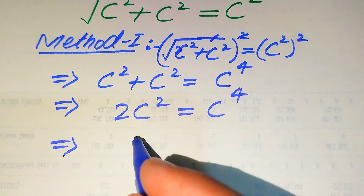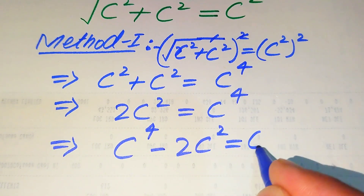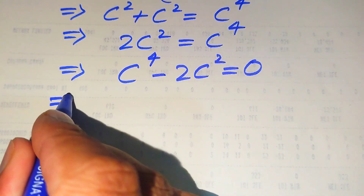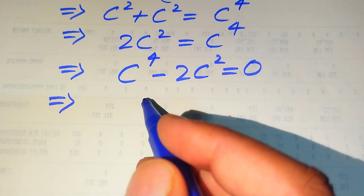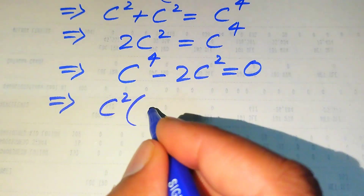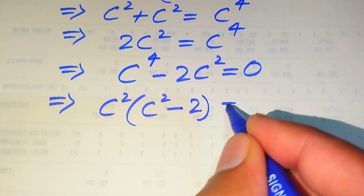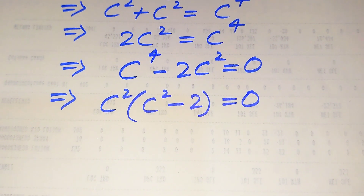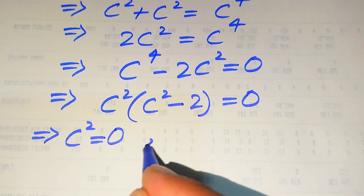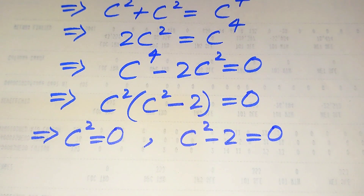In the next step we move two times c squared to the right hand side, giving c to the power of four minus two times c squared equals zero. Now we factor out c squared from both terms, giving c squared times (c squared minus two) equals zero. We divide this into two cases: the first case is c squared equals zero, and the second case is c squared minus two equals zero.